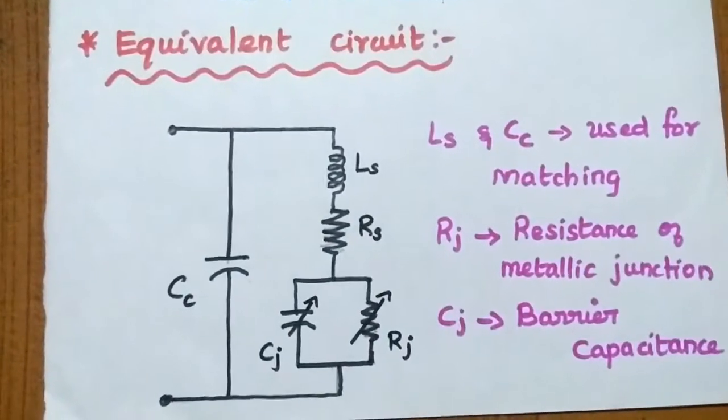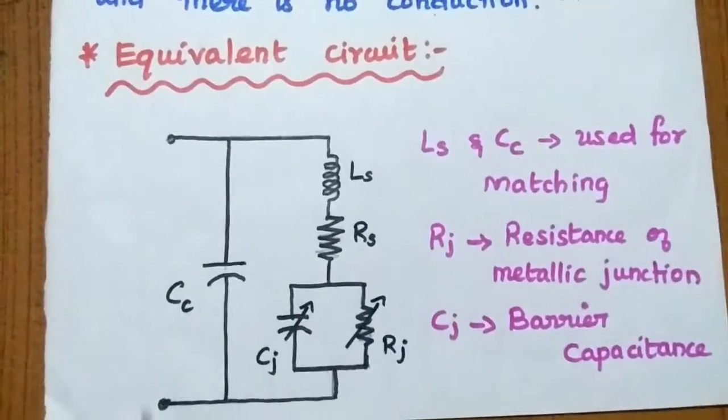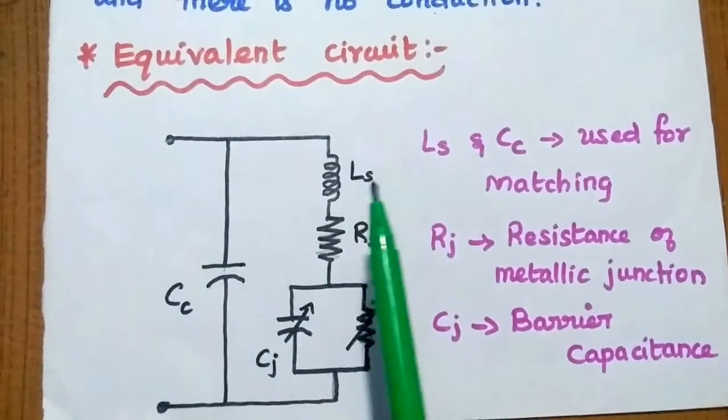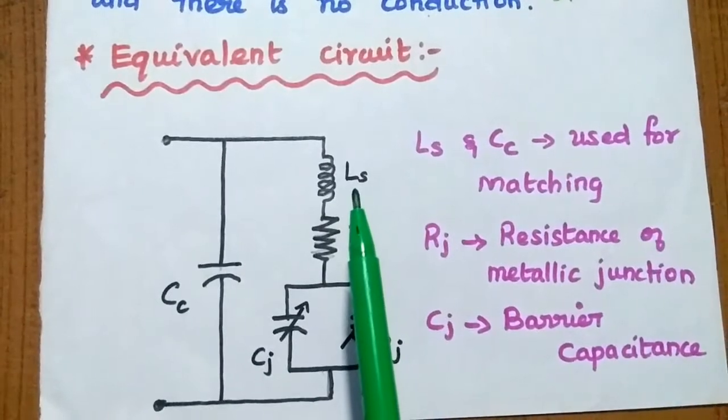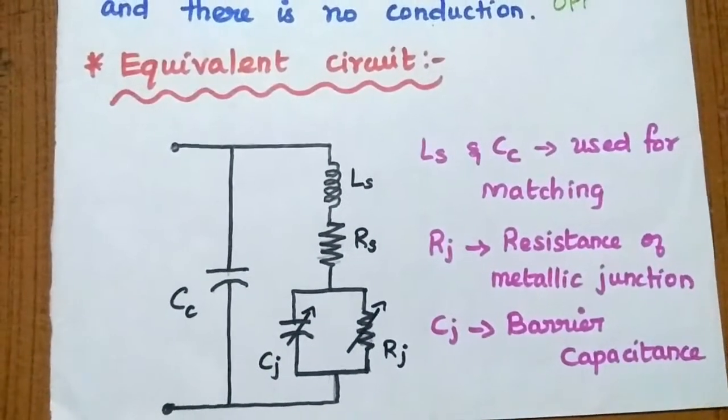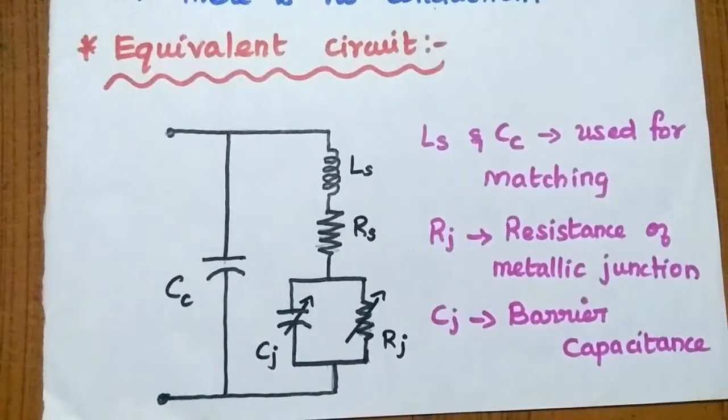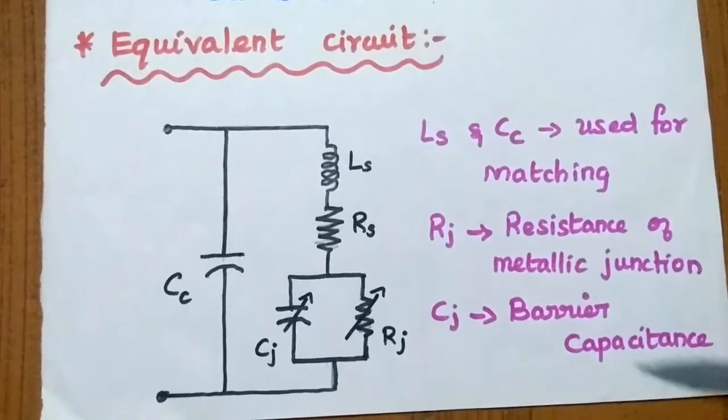So this is the equivalent circuit for this Schottky barrier diode. It has coupling capacitance, series inductance. These all are mainly used for matching purpose. And this RJ and CJ, both are the junction resistance and capacitance, which are variable. So based on the depletion region, it can be varied.